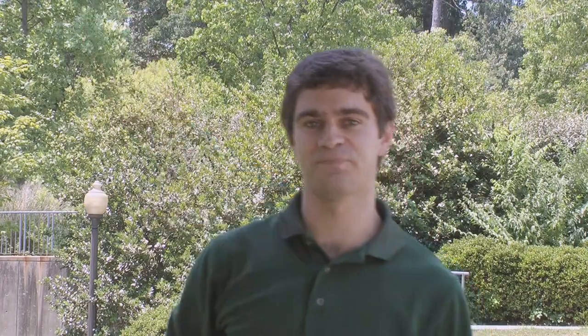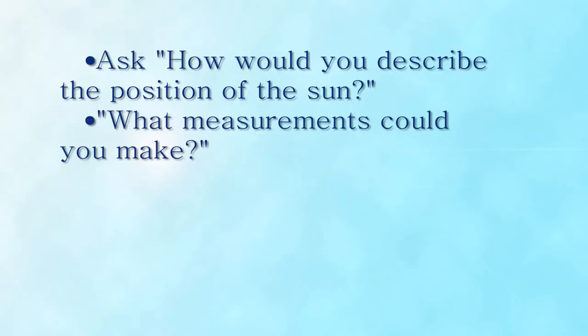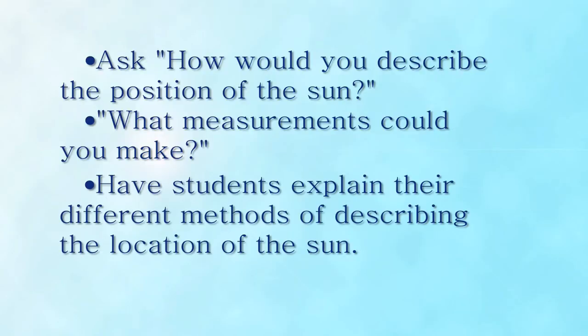Ask the students the following question to get them started in this activity: Where is the sun in the sky? The students may point and say, oh, it's right there. What we really want to do is find a way to describe its position in the sky mathematically. Ask the students what measurements they can make using these tools to determine and describe the position of the sun in the sky, and give them a few minutes to experiment.